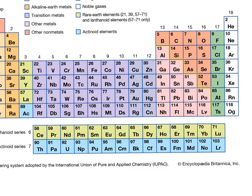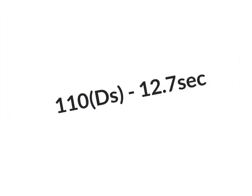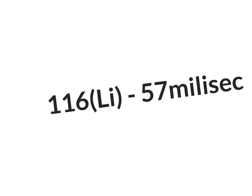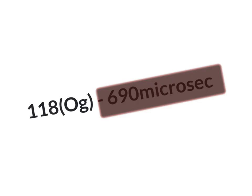The trans-actinide synthesized elements get larger and larger, their atomic half-lives become shorter and shorter. This goes into the realm of microseconds. For the final element, element 118 or Oganesson, it's just 690 microseconds.